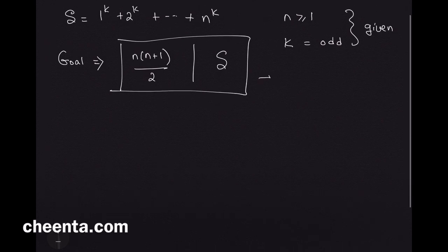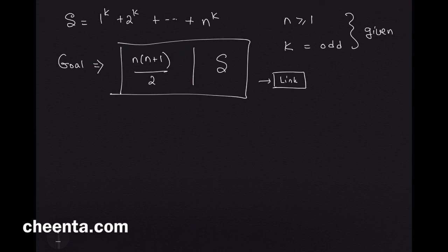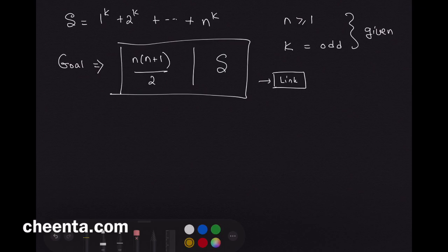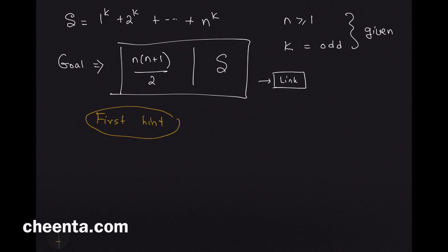Now as usual the link in the description will contain all the hints and the final solution. But the first hint goes like this. So this is the first hint and it's like a major hint so that you can really try the problem.